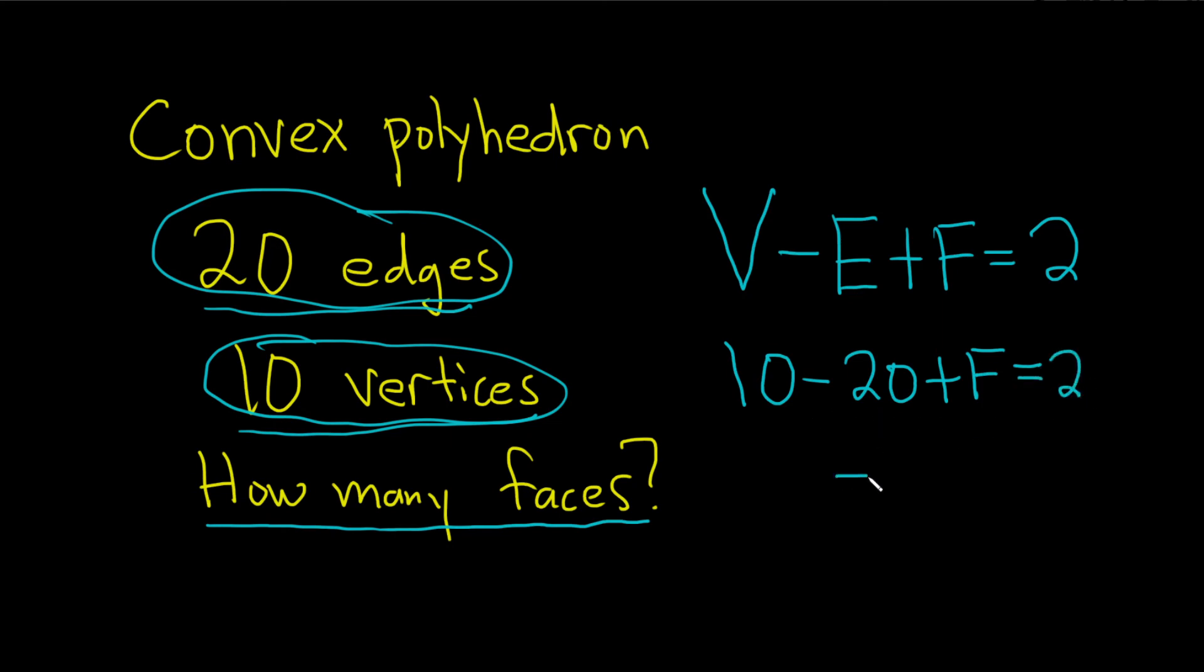So 10 minus 20 is negative 10, and then plus F, and that's equal to 2. Then we can just add 10 to both sides, so plus 10 plus 10, so we have F equal to 12. So 12 faces.